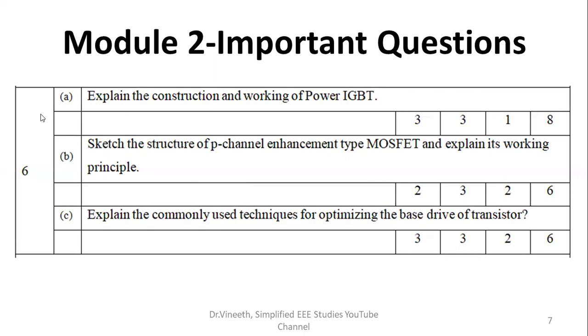The next one is explain the construction working of power BJT. You have to mention the construction detail means figure is required. Five marks for figure, another three marks for the explanation. So, totally eight marks.